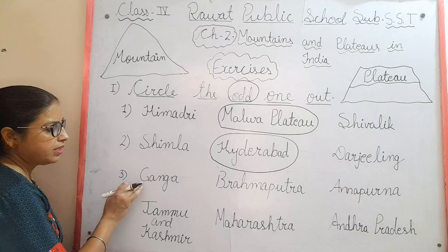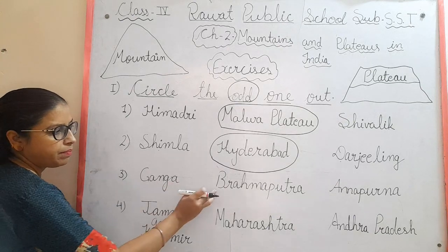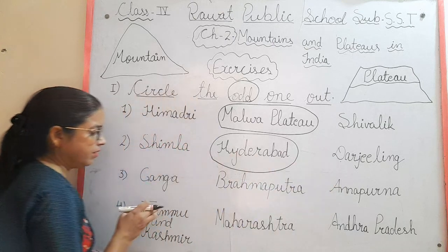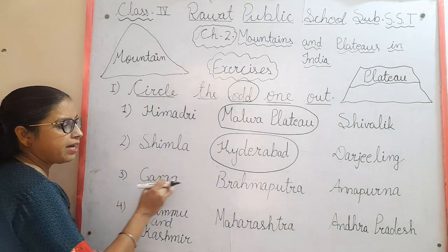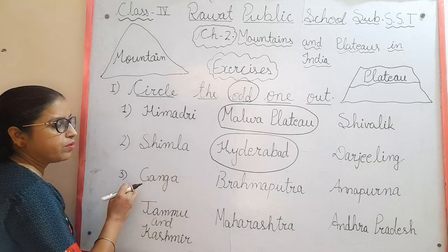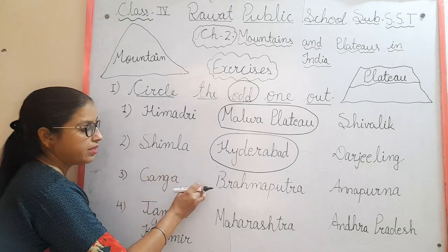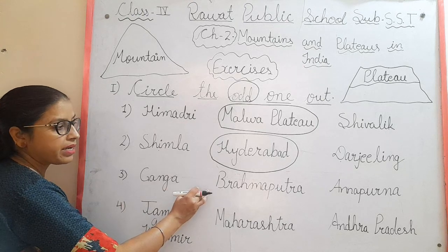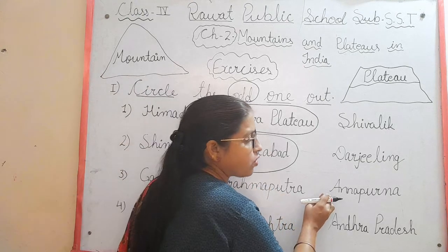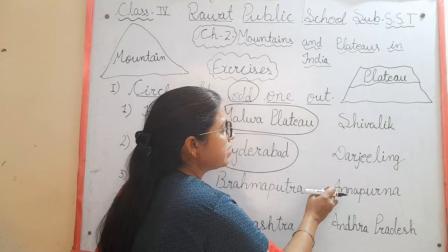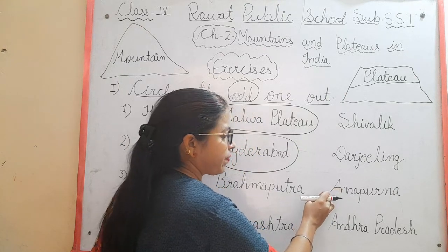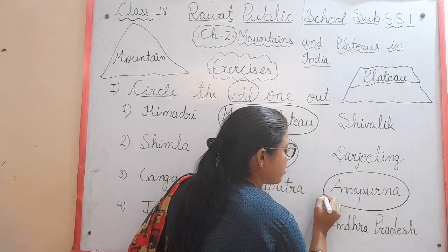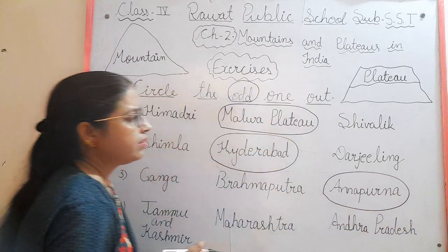Third set: Ganga, Brahmaputra, and Annapurna. Ganga and Brahmaputra are both rivers. But Annapurna is not a river. So Annapurna is the odd one out.